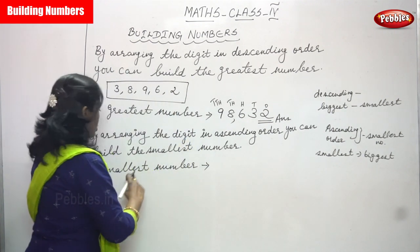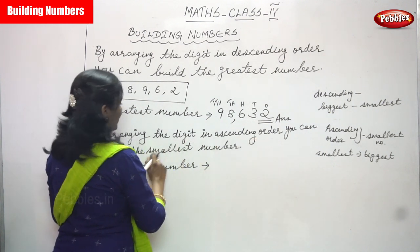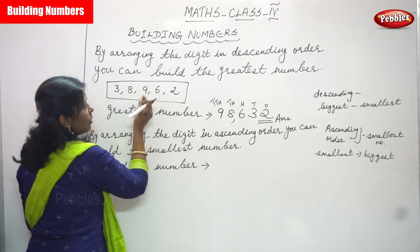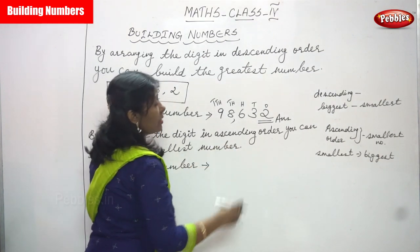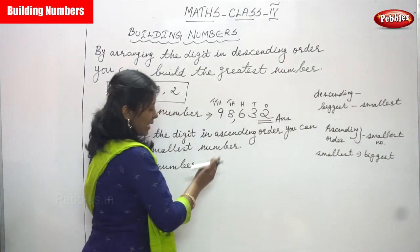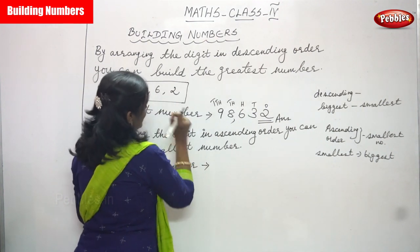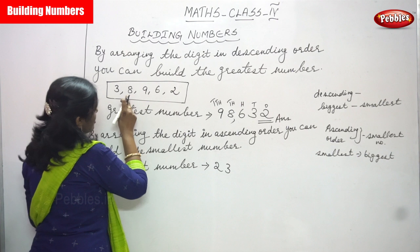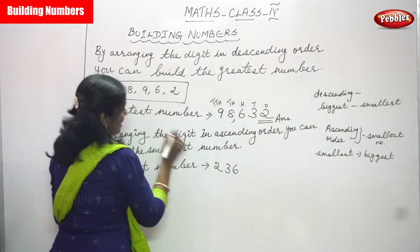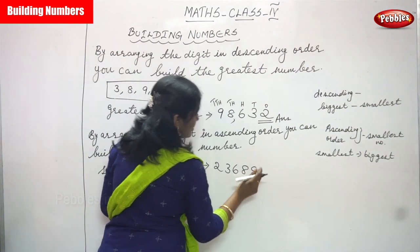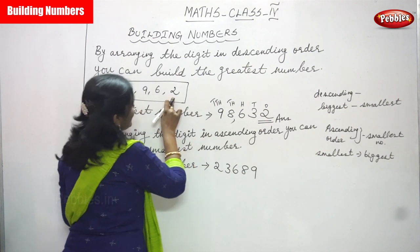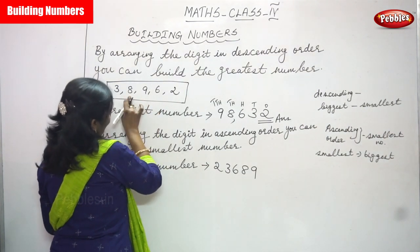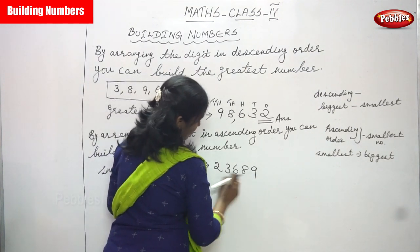By arranging the digits in ascending order you can build the smallest number. In ascending order, the smallest number first: two is the very least number, next least is three, next smallest is six, next is eight, and the last — the greatest — is nine. So: two, three, six, eight, nine. The first least is two, second least is three, third is six, fourth is eight, and fifth is nine, which is the greatest number.